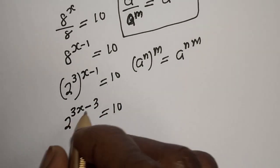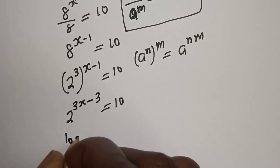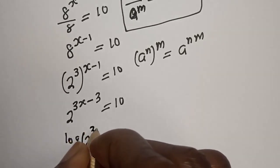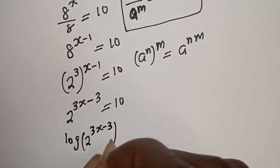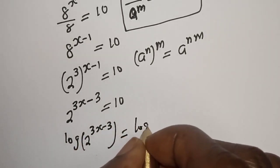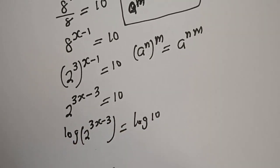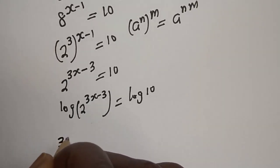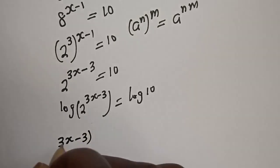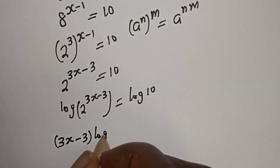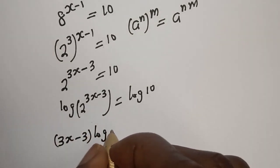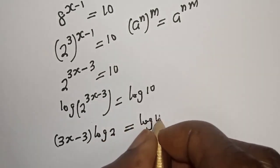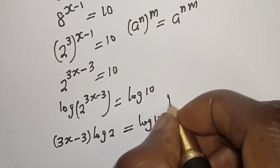Then let's take the log of both sides: log of 2 raised to power 3s minus 3 is equal to log 10. Then we have 3s minus 3 times log 2 is equal to log 10.